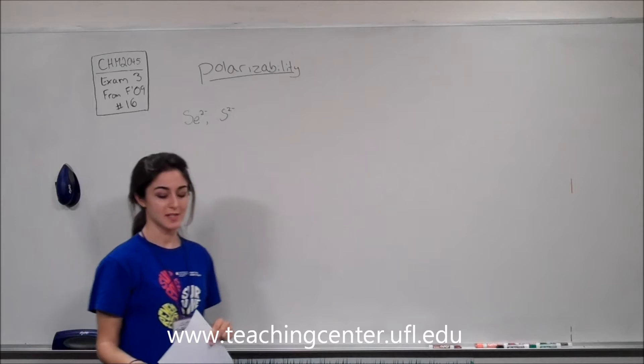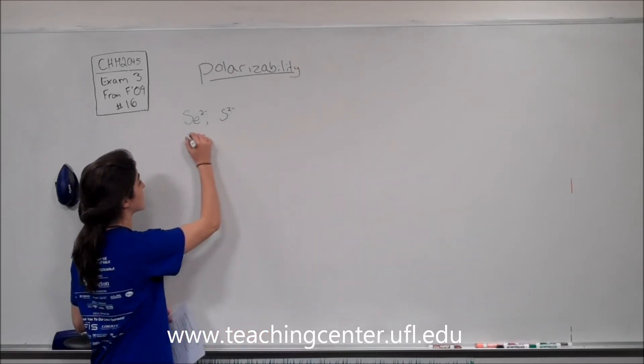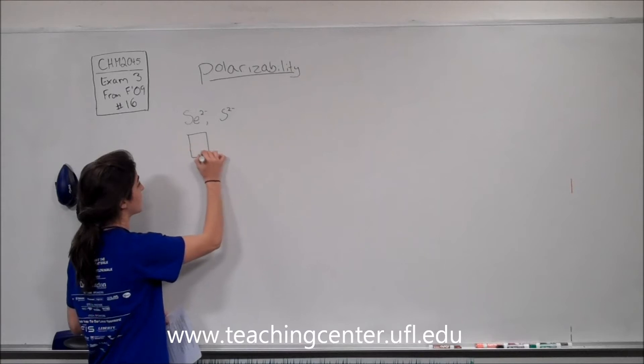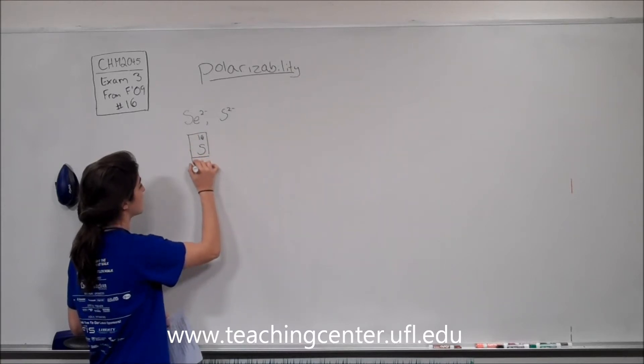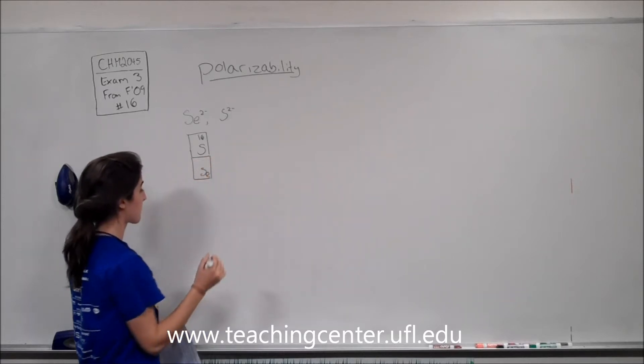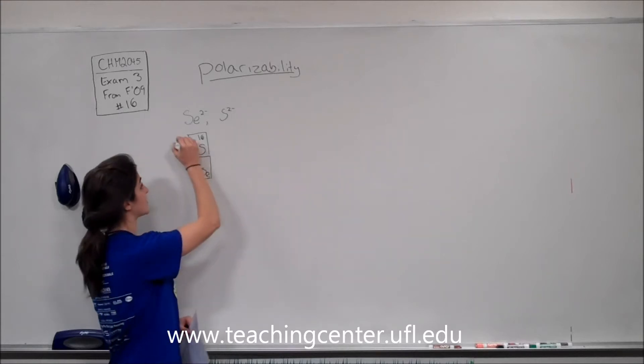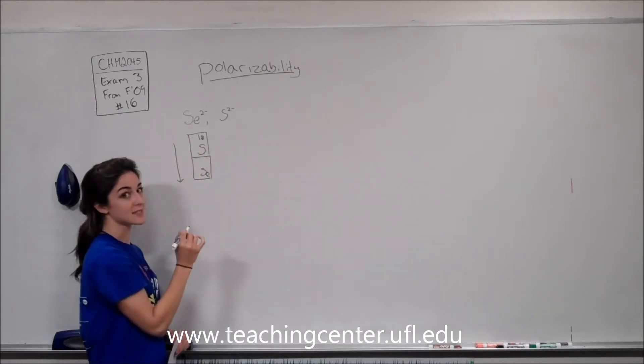So the first thing we could do is check out where they sit on the periodic table. When we look at the periodic table, we see that S is number 16 and then Se sits below it. And we know from periodic trends that as we move down the periodic table, size increases.